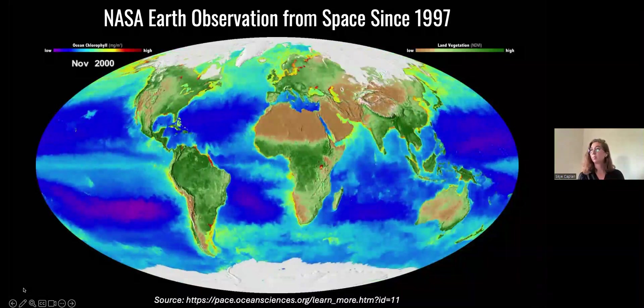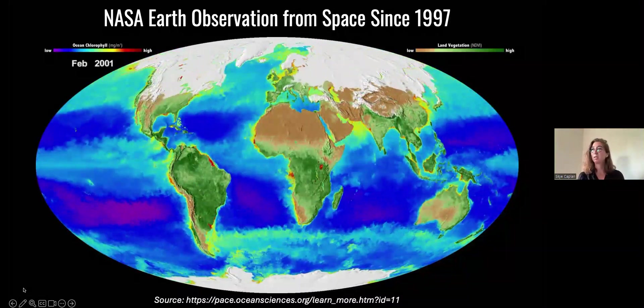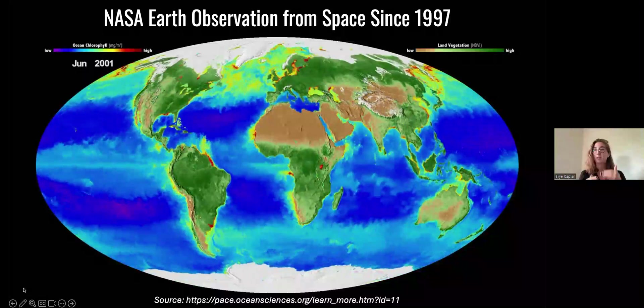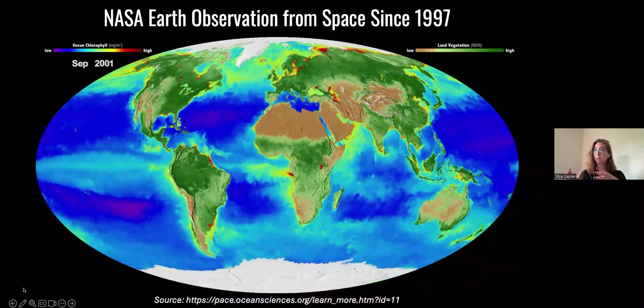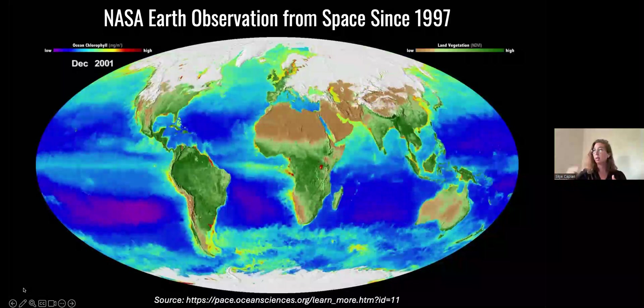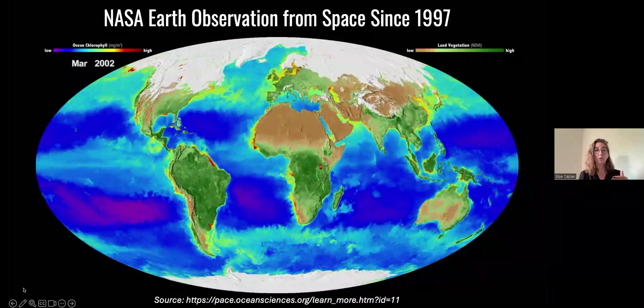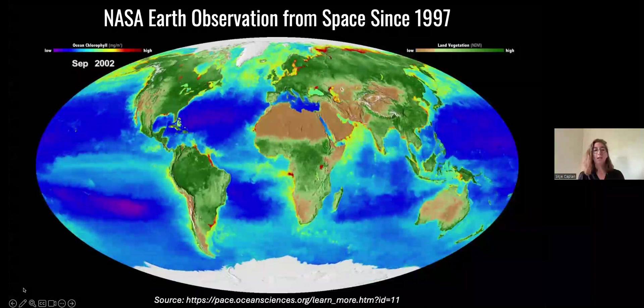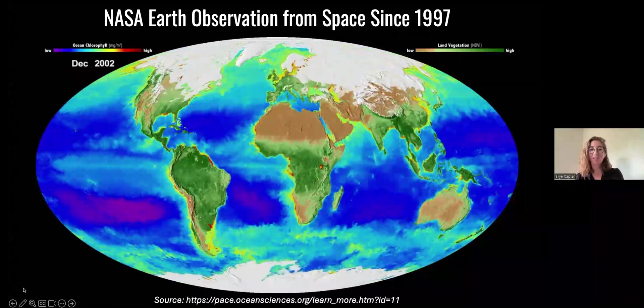Showing us how the chlorophyll concentrations in the ocean and the greenness of vegetation changes from month to month and year to year. But that's not even as far back as it goes. There are actually missions that go all the way back to the 70s. I'm thinking of one called Landsat specifically. So the Earth has clearly been a priority for NASA for quite some time. You can see as the seasons change, the greenness shifts. There's ice at the poles that comes down and up as the Earth gets warmer and colder throughout the years.